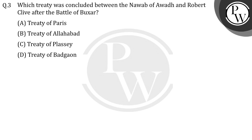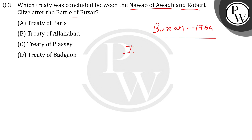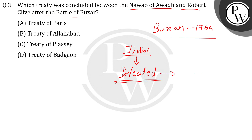Hello everyone. Let's see the question — which treaty was concluded between the Nawab of Awadh and Robert Clive after the Battle of Buxar? The Battle of Buxar (Baksar ka yudh) was fought in 1764, and in this battle the Indian powers were defeated — the Indian rulers were defeated by the British force.